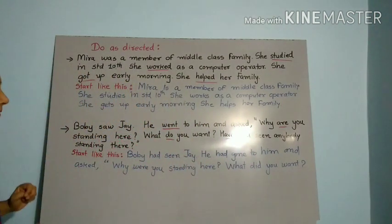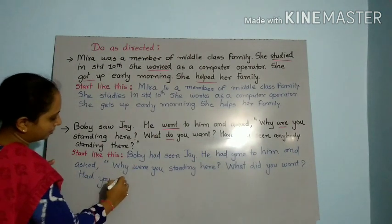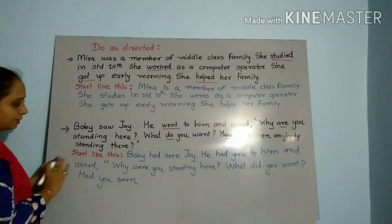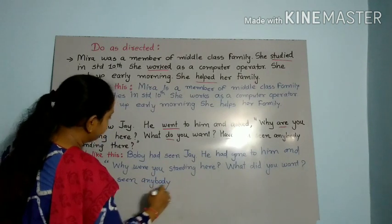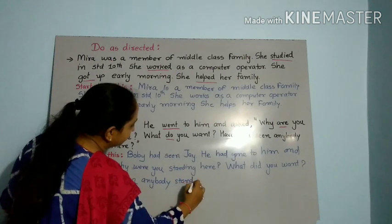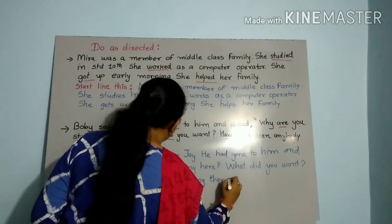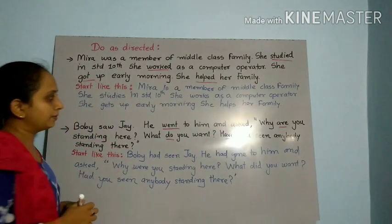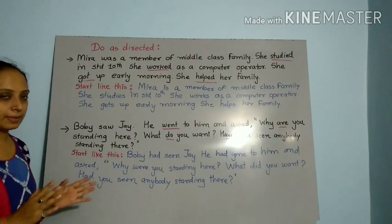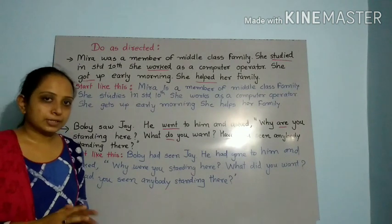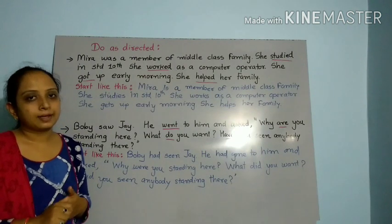Now we have to say hand. So, had you seen? Whatever. In this past participle, we have to say that. Anybody standing there. So we have to say that. I hope that you can understand all of this. So we have to say that — please do this. Thank you.